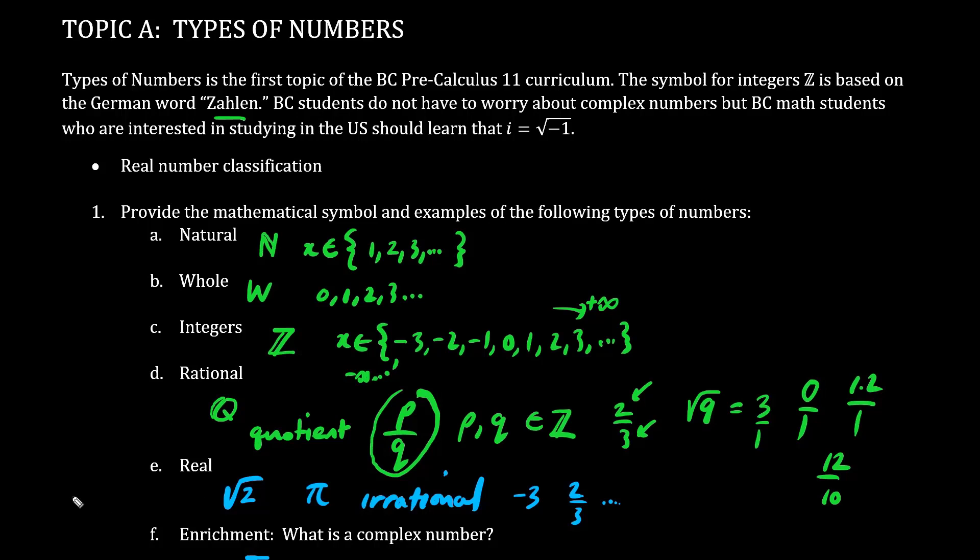Now we're not responsible for studying complex numbers, the letter C. However, just for enrichment, a complex number has a real portion as well as some imaginary portion. A and B are real numbers, but i is the imaginary number, and the definition of i is the square root of negative 1. If you plan on writing the essay for the exam applying to the USA, it's nice to study a little bit about complex numbers. Just for fun, if you square both sides, we have i squared, and the square root sign disappears, equals negative 1.